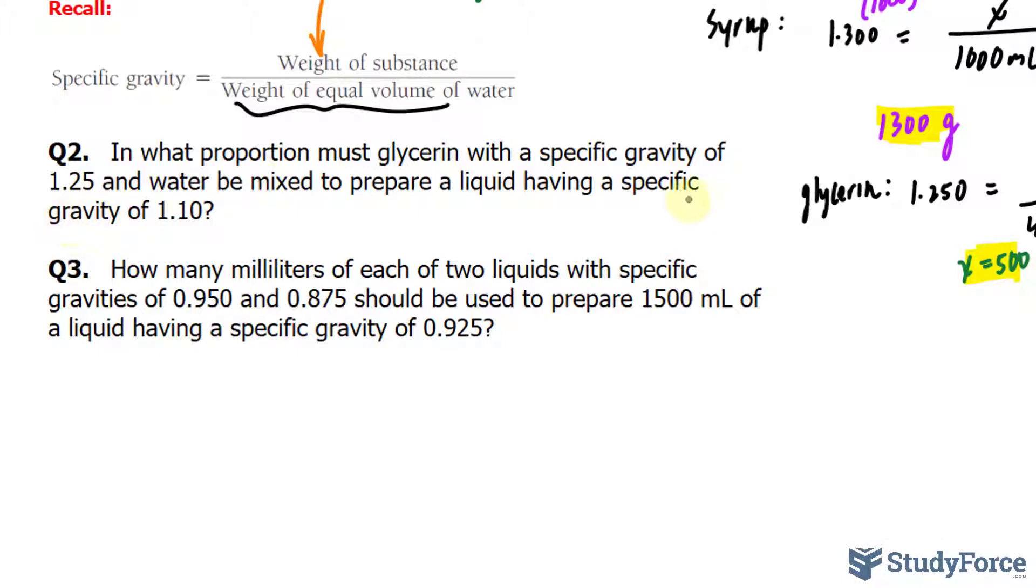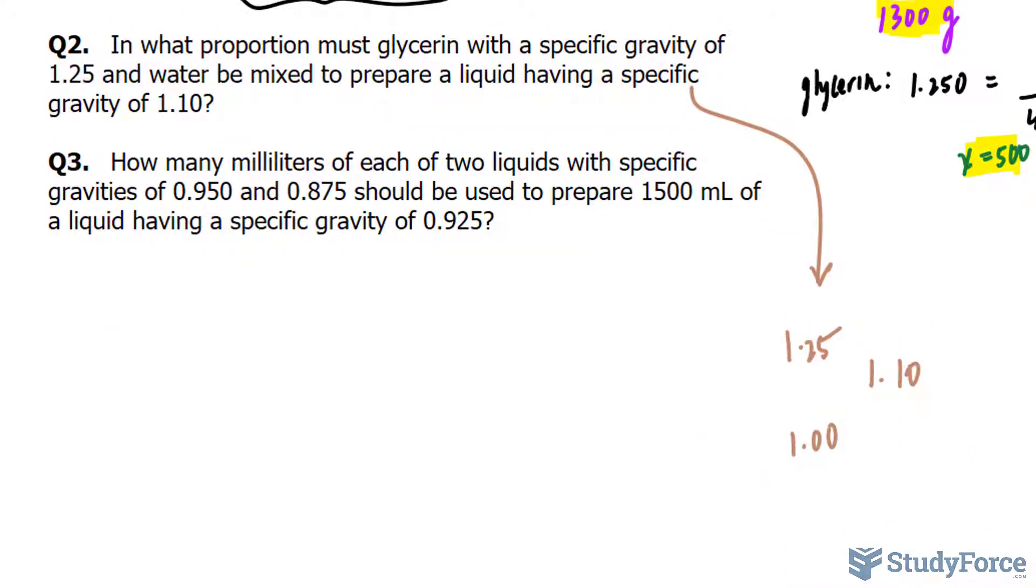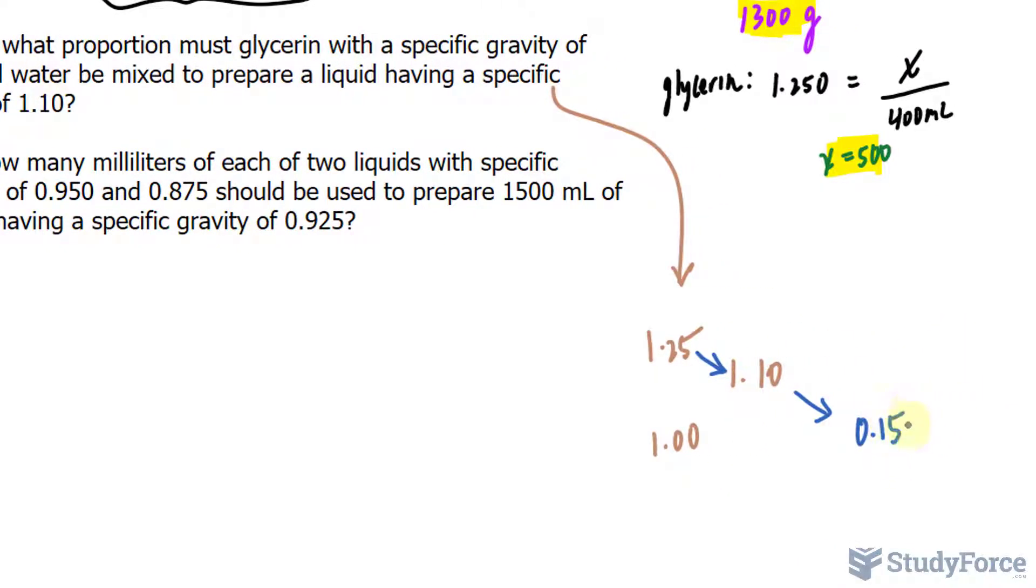So using the same approach as the alligation alternate method, we have two mixtures. We want to end up with a mixture that has a specific gravity of 1.10, and the glycerin, the higher of the two, because it's being mixed with water and that has a specific gravity of 1, I'll write it over here, and water has a specific gravity of 1.00. So notice how I position these numbers, because that's very important. What I will do next is subtract 1.10 from 1.25. So I'll place an arrow where I subtract 1.25 minus 1.10, and that gives me 0.15.